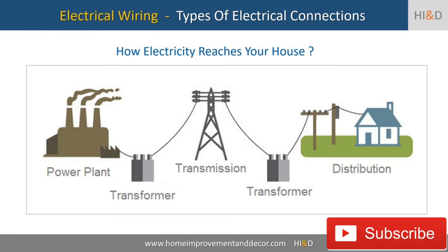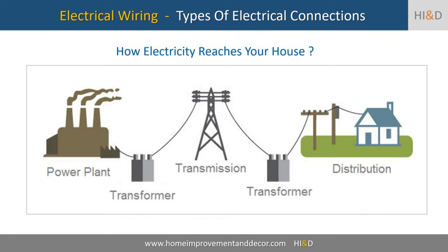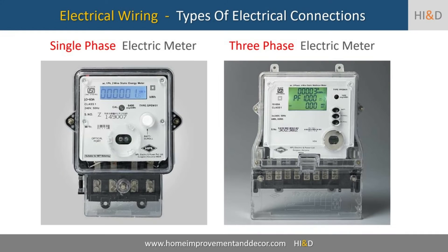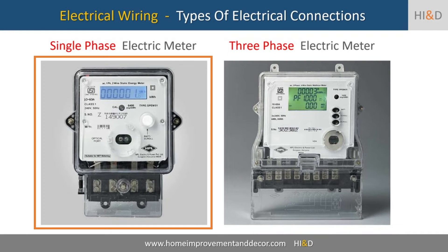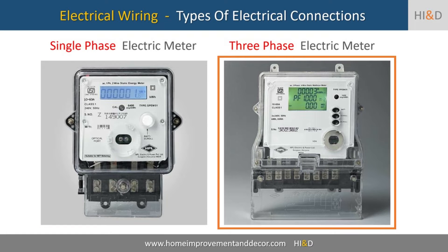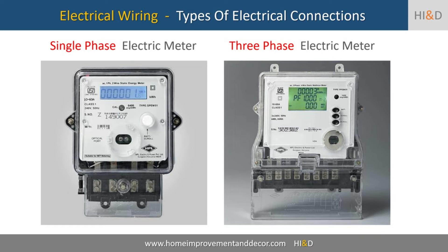The electricity distribution company basically offers two main types of electricity connections. The first type is called a single phase connection and the second type is called the three phase connection. Later in this video, we are going to discuss each of these connection types in detail.